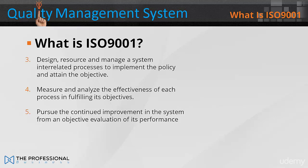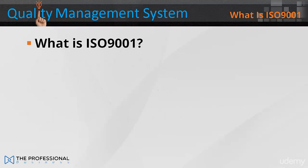Four: measure and analyse the effectiveness of each process in fulfilling its objectives. Five: pursue the continual improvement of the system from an objective evaluation of its performance.